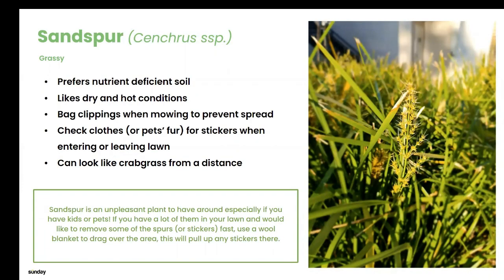Sandspurs — you may hear them called stickers in Texas — can be a huge problem. They have horrible little burrs that get stuck to your clothes, your dog, everything. They really prefer nutrient-depleted soil that is a little more drought-leaning. Make sure you're on a good watering schedule and fertilizing regularly. Top dressing will really help keep these from coming back. Mow often and bag the clippings. It can look like crabgrass from a distance, but you'll know once you see the little seed heads. If you're battling these heavily, throw a wool blanket over the area and pull it slowly — you should get the majority of stickers off. Then you can treat with Weed Warrior or hand pull. As long as you stick to a good fertilizing schedule and top dress, they should start to fade out.